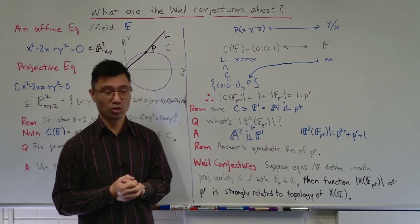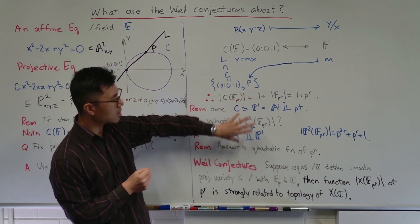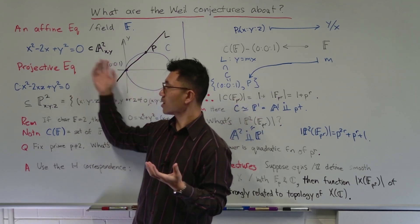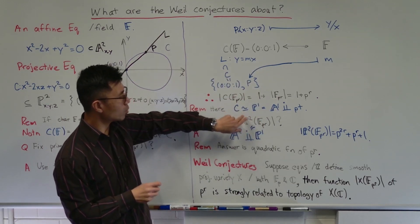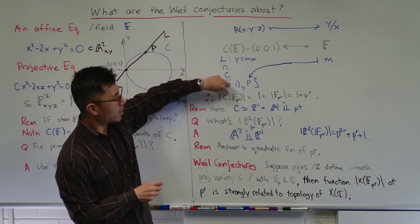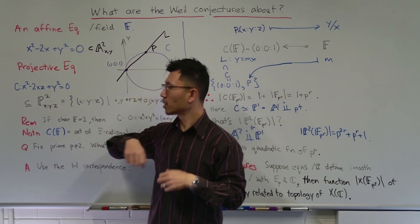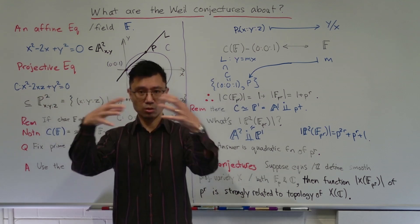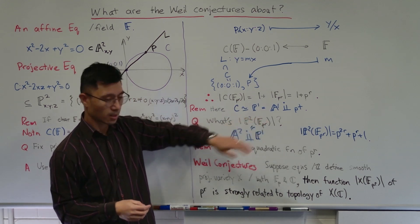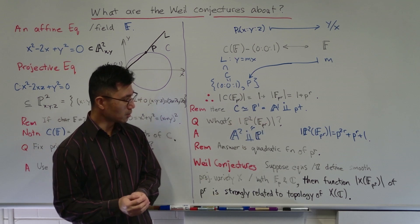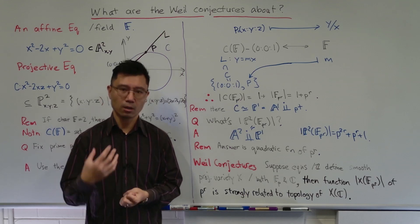What does one-dimensional and two-dimensional really mean here? One way to think about this is to look over the complexes. Over the complexes, which are algebraically closed, it's easy to get solutions to polynomial equations. In our case, over the complexes, the points of C form just the projective line over C — a Riemann sphere — which is two-dimensional as a real manifold. And the projective plane P^2, if you look at it over the complexes, is a four-dimensional real manifold. So you can talk about dimension by thinking of solutions over the complex numbers.